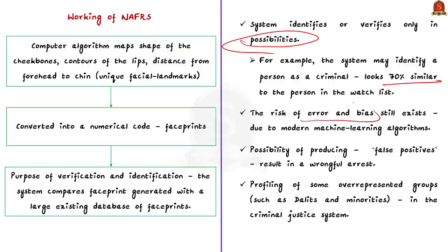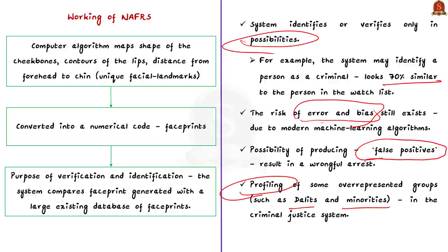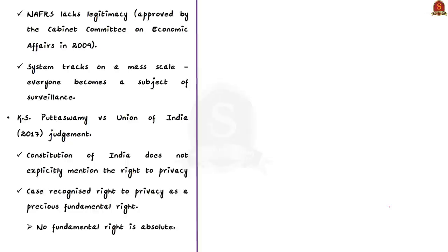Because the software works in possibilities, there is still a chance of error and bias. It can produce a large number of false positives. The accuracy of facial recognition software has improved over the years, but it still has significant errors and bias. This can lead to wrongful arrest, and the error and bias in facial recognition software can also lead to profiling of people.